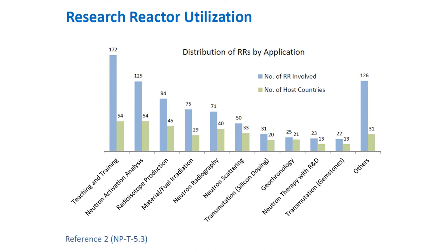Here is the distribution of research reactors by application. The blue bar represents the number of research reactors involved, and the green bar represents the number of host countries. Teaching and training is at the top with 172 research reactors involved, followed by neutron activation analysis and radioisotope production. Other applications also feature prominently on the list.